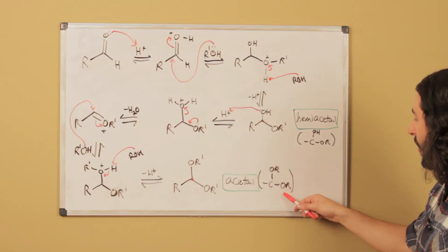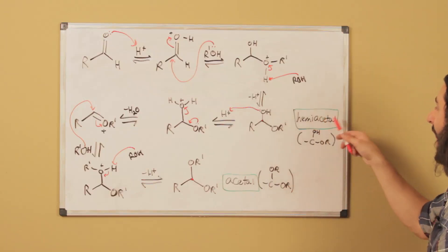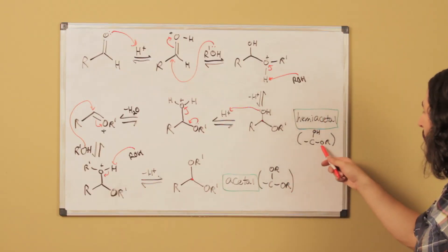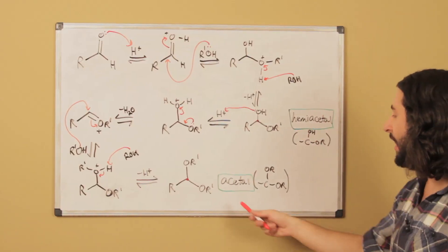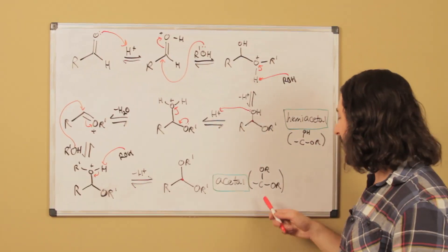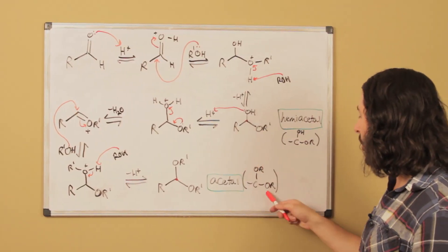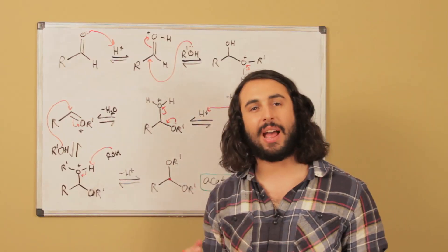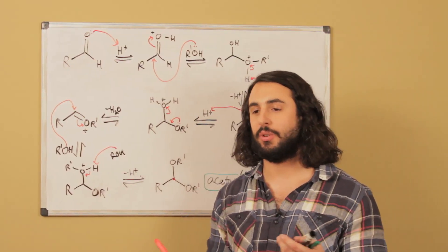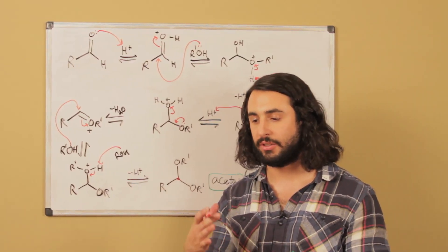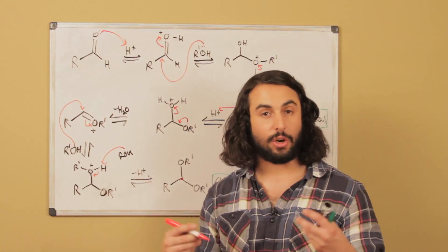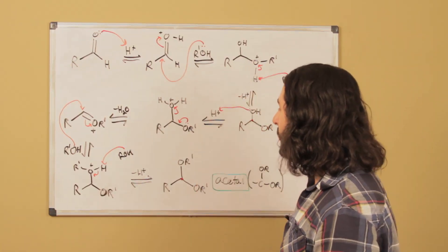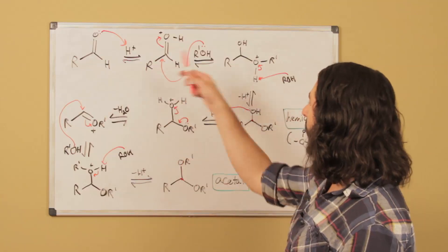Now we have a carbon attached to OR and OR, and that's called an acetal. Hemiacetal — hemi meaning half — we've got OR and OH; an acetal is OR and OR attached to the same carbon. This is chemistry that happens a lot in the body: it has to do with how certain molecules cyclize, carbohydrates, things like that.